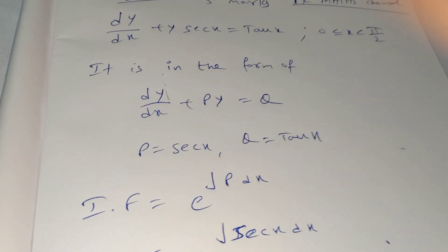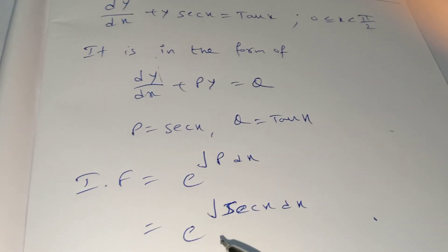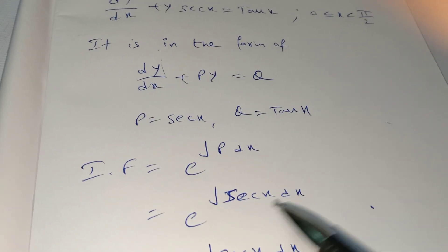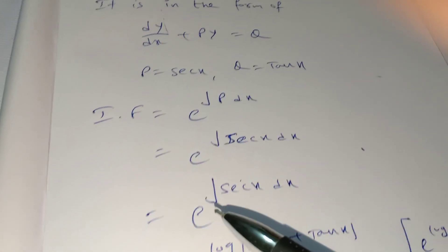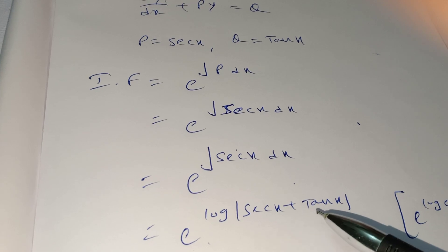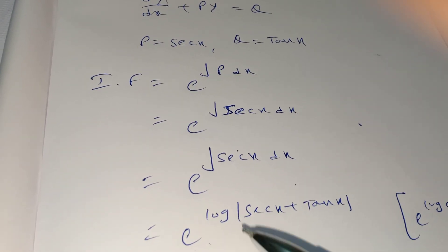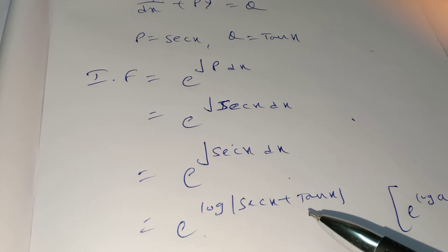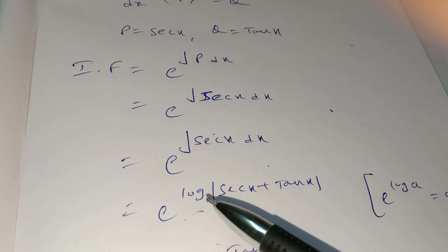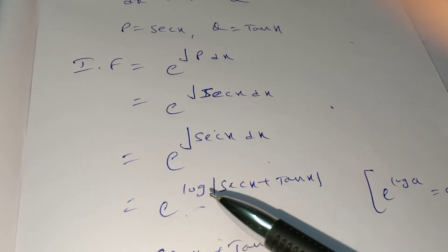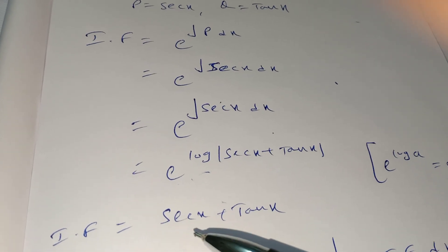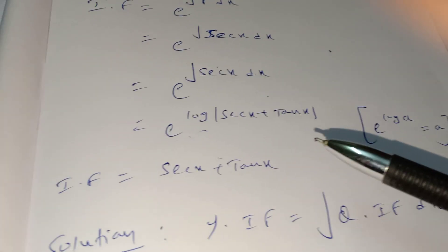The integrating factor (IF) is e^(∫P dx) = e^(∫sec(x) dx). The integral of sec(x) is log|sec(x) + tan(x)|, so IF = e^(log|sec(x) + tan(x)|). Since e^(log a) = a, the e and log cancel, giving IF = sec(x) + tan(x).